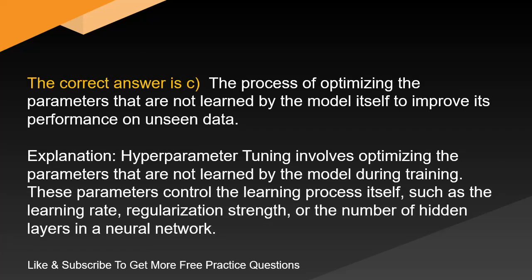The correct answer is C: the process of optimizing the parameters that are not learned by the model itself to improve its performance on unseen data. Hyperparameter tuning involves optimizing the parameters that are not learned by the model during training. These parameters control the learning process itself, such as the learning rate, regularization strength, or the number of hidden layers in a neural network.